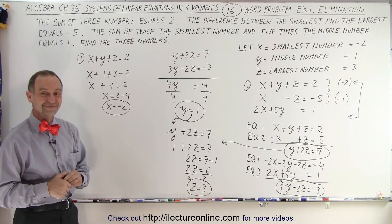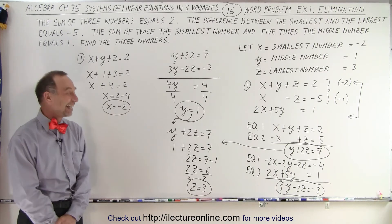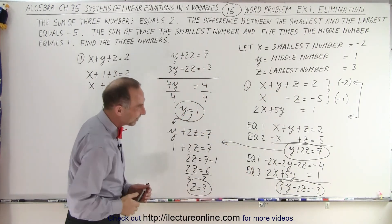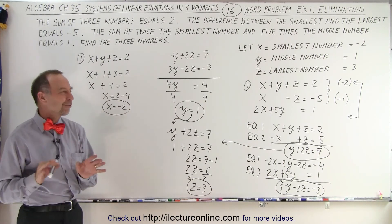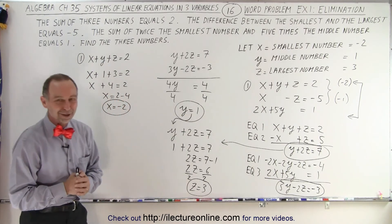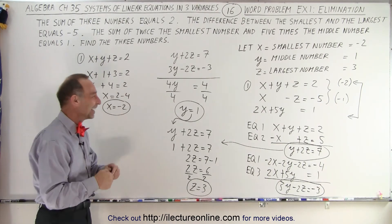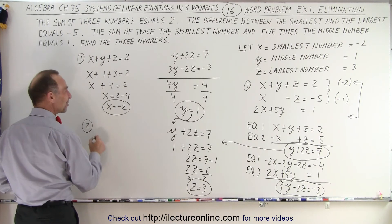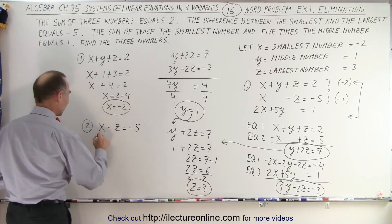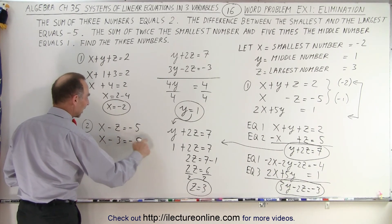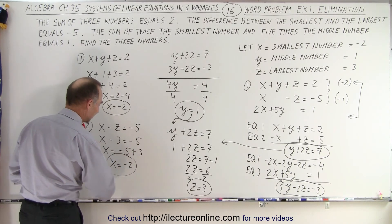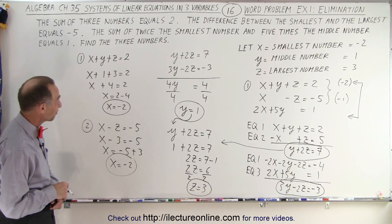Would it be easier to find x using equation 2? Yes, it would. I picked equation 1 because all the coefficients were 1, and I prefer avoiding negatives, but equation 2 works just as well. Using x minus z equals negative 5, with z equals 3: x minus 3 equals negative 5, so x equals negative 5 plus 3, giving x equals negative 2 — the same answer in one less step.